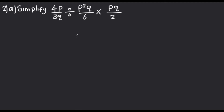Welcome. In this video we are going to look at Question 2, the Math Paper 2 for the year 2022 of the GCE. The first question, part A, we are told to simplify. To simplify simply means to make it simple. We have two operators: a division operator and a multiplication operator.